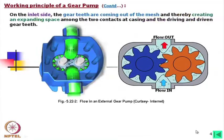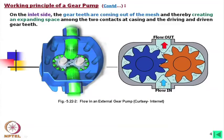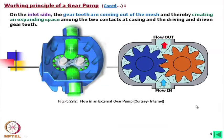On the inlet side, the gear teeth are coming out of mesh, thereby creating an expanding space among the two contacts at the casing and the driving and driven gears. If we consider the contact point that separates the high-pressure zone from the low-pressure zone, from this point to that point, when the gears are moving, this space is increasing — so there is suction. Whereas on the other side, that area is decreasing. We will derive how much this area is increasing or decreasing to find the flow rate of the gear pump.